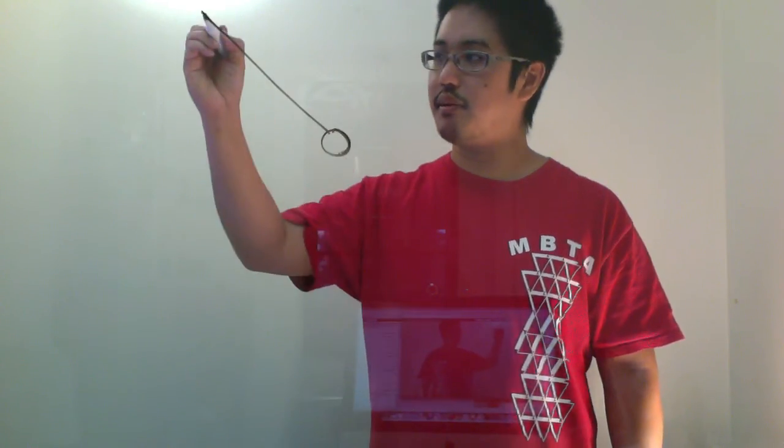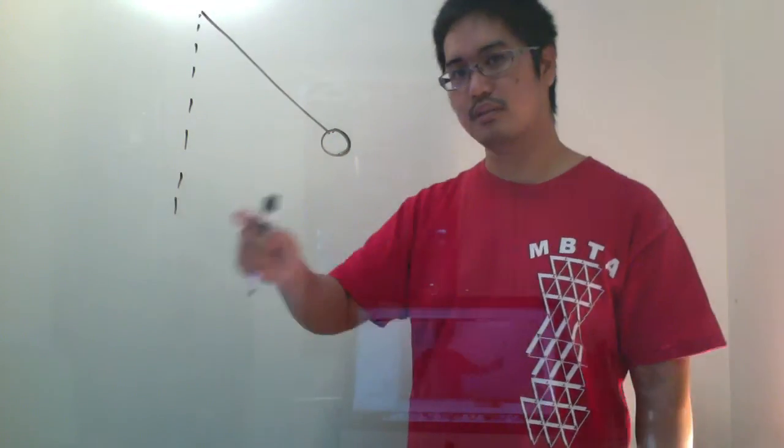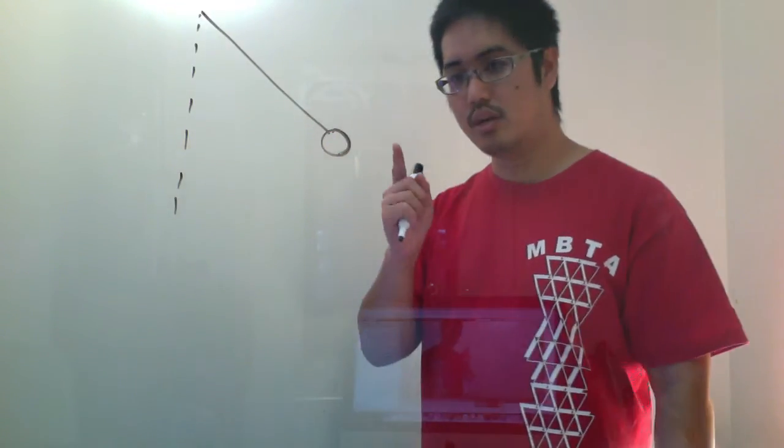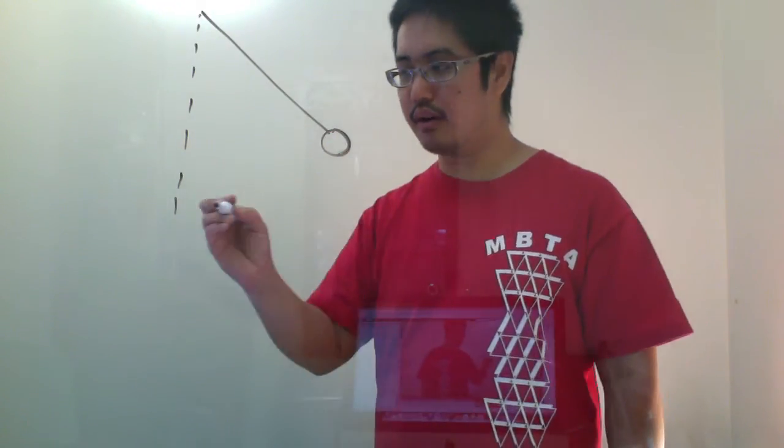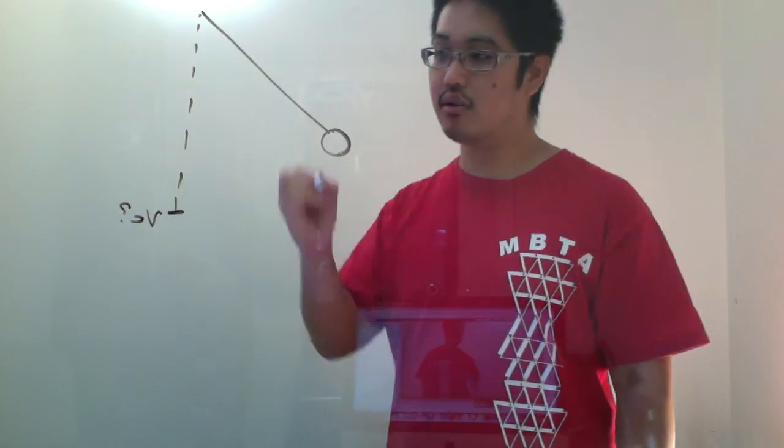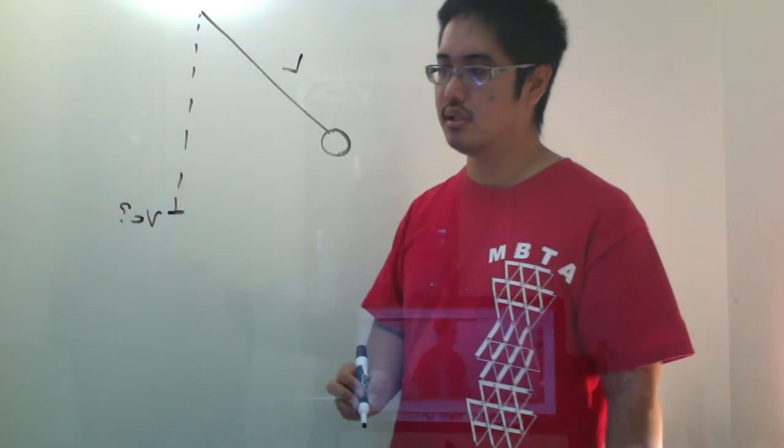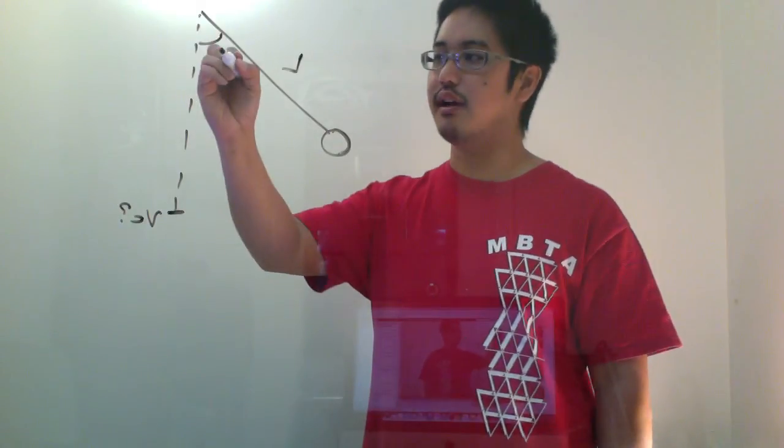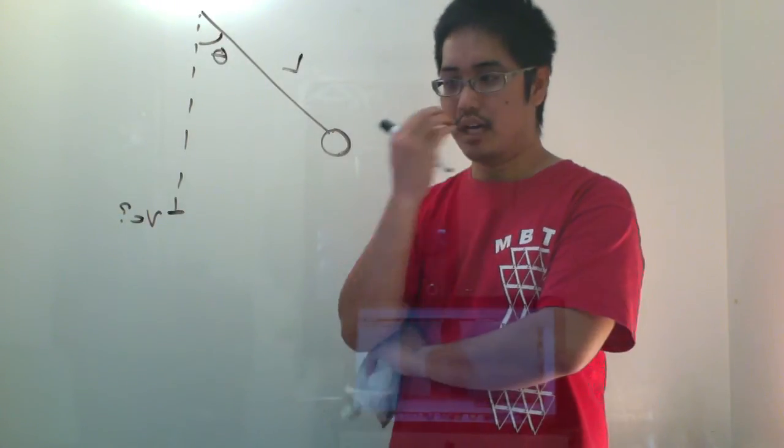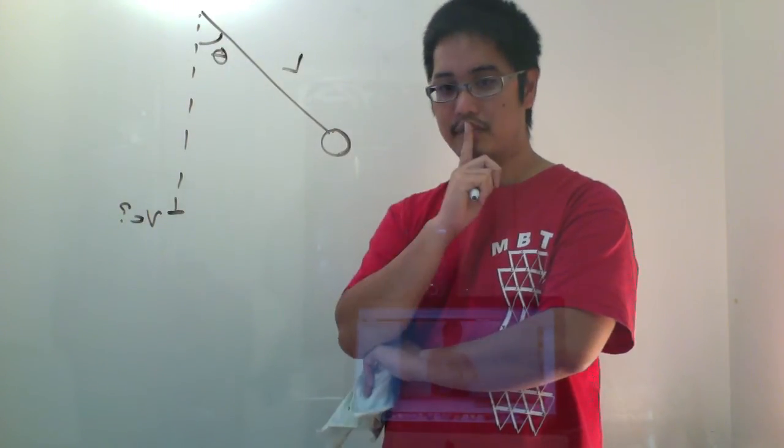say I have a pendulum. All right? You know what a pendulum is. You put it up here, it swings back and forth. My question to you is, how do I figure out how fast it's moving right here? I know the length of my pendulum is L, and I know the angle that I moved it at is at theta. How do I figure out how fast it's moving right here? Okay.